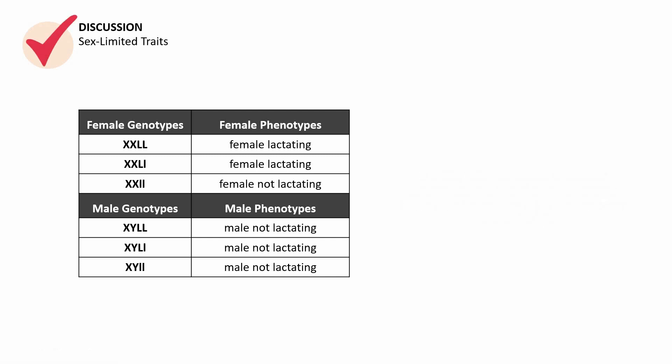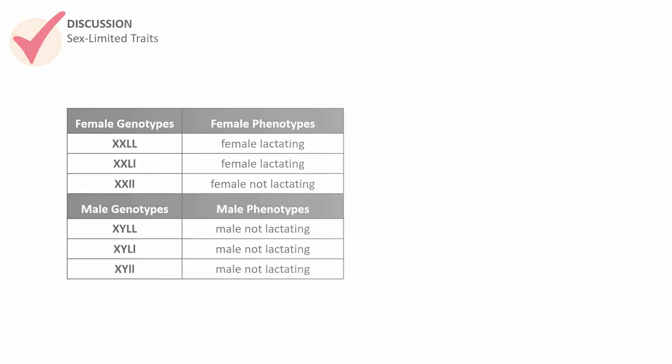That ends the first part of the discussion — a discussion about sex-limited traits. Remember, sex-limited traits are found in the genotypes of both genders, but they can only be expressed in one of those two usual biological genders.